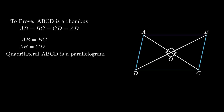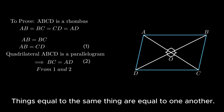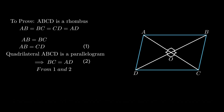Since opposite sides of quadrilateral ABCD are equal, ABCD is a parallelogram. As opposite sides of a parallelogram are equal and parallel, side BC = side AD. By the axiom that things equal to the same thing are equal to one another, from equations 1 and 2 we conclude AB = AD. Since all sides of quadrilateral ABCD are proved equal, ABCD is a rhombus.